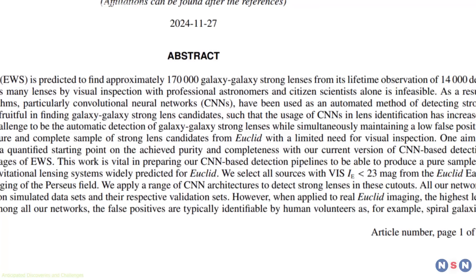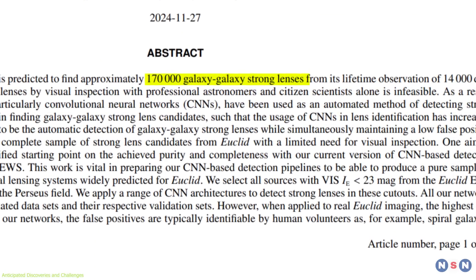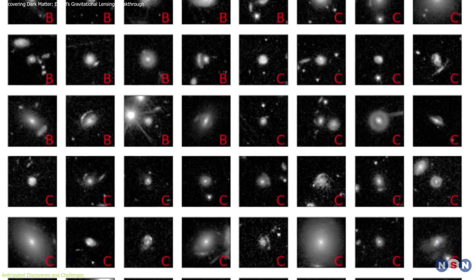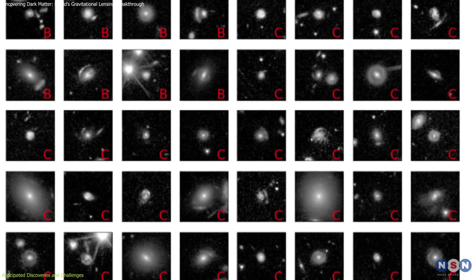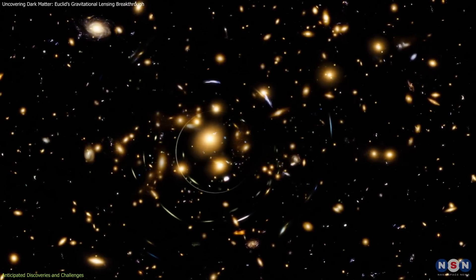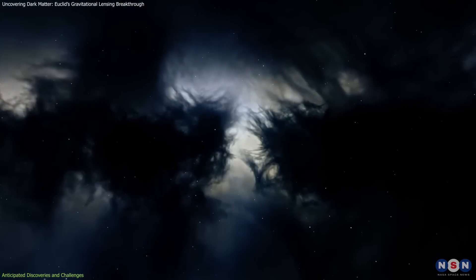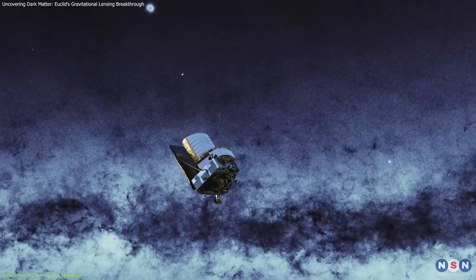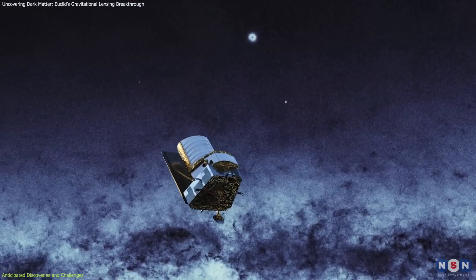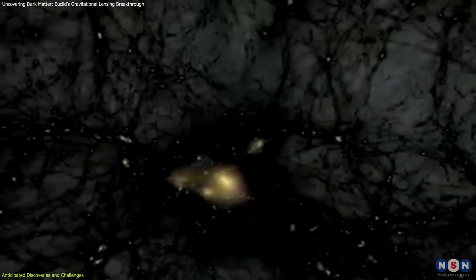Euclid is expected to uncover over 170,000 strong gravitational lenses, a monumental leap from the few thousand currently known. These lenses serve as cosmic magnifying glasses, revealing distant galaxies otherwise invisible, and providing unparalleled insights into the distribution of dark matter. The sheer scale of this endeavor is unprecedented, promising to refine our understanding of the universe's structure and its evolution over billions of years.